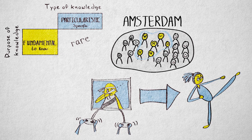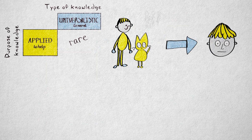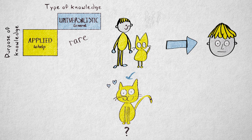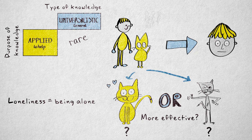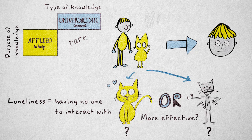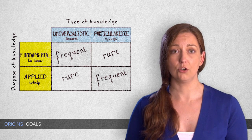Applied research is often particularistic, aimed at solving a problem for a specific group in a specific context, but it can be universalistic. Take the cat intervention aimed at lowering depression — we could expand the study by comparing a group of people that take care of a friendly cat that seeks their company versus a cat that avoids any contact. This helps find out what type of treatment is effective, but it also adds a universalistic element: we can investigate what it means to be lonely — is the mere presence of a living being enough, or is interaction required? In many cases, applied research produces results that lead to new insights, which can provide fundamental knowledge. So the two types of research can reinforce each other.